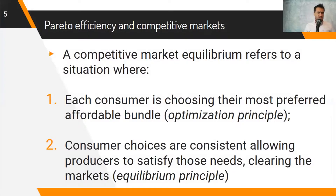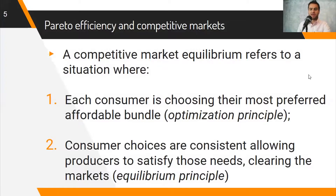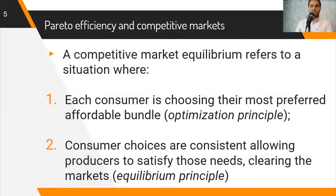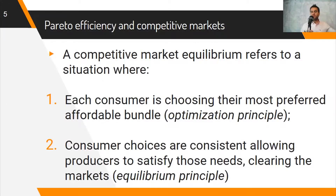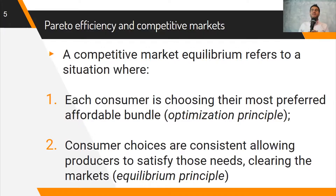A competitive market equilibrium, as the ones you saw at the beginning of this course when we were finding the equilibrium of demand and supply, arises or is competitive because of two key principles. First of all, that each consumer is choosing their most preferred affordable bundle — everything we did before the first midterm, this idea of the optimization principle. As long as people are able to choose their optimal quantities of different goods, then you are basically moving towards a competitive and efficient equilibrium. The other principle is that the consumer's choices are consistent, allowing producers to satisfy those needs and clearing the markets.